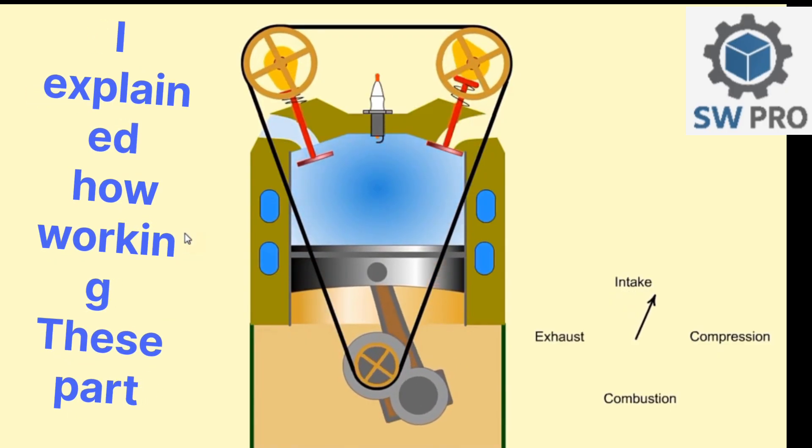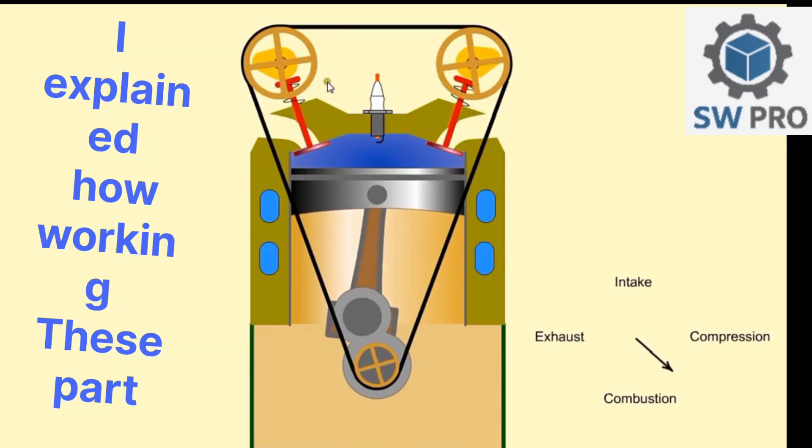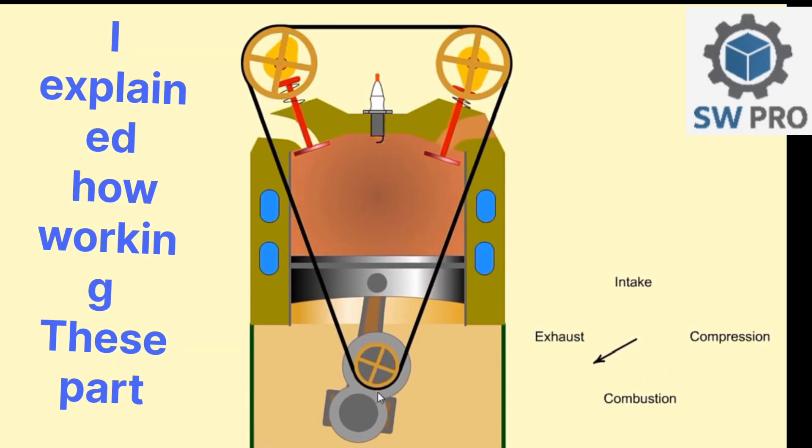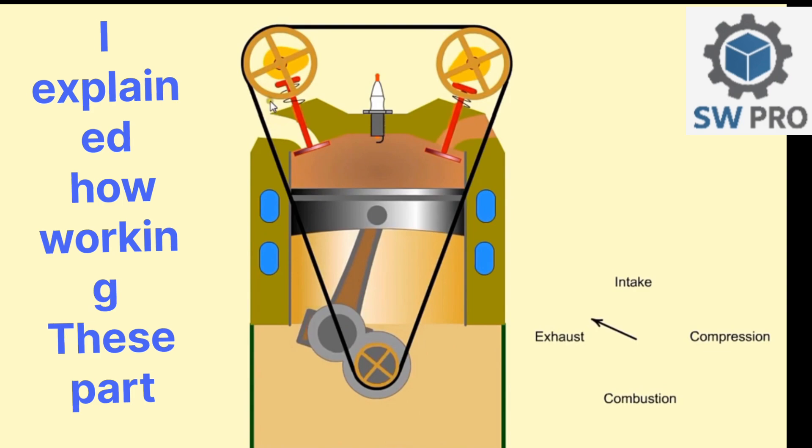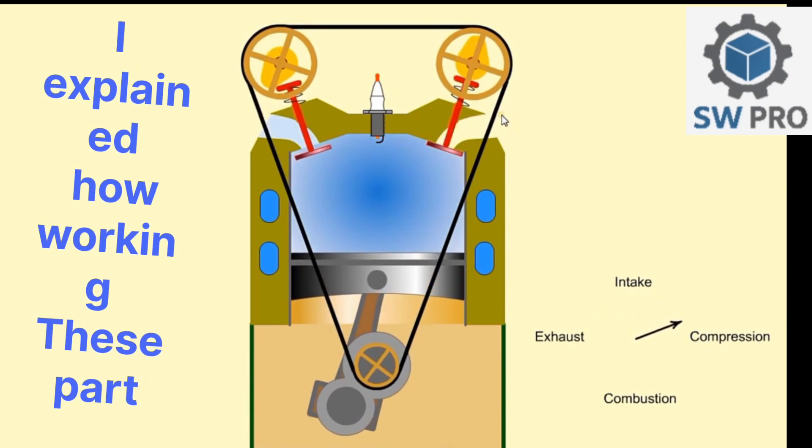Note the camshafts which operate the valves only rotate at half the speed of the crankshaft. This is achieved by using larger diameter pulleys on the camshafts. The timing belt ensures that the valves open and close at the correct time relative to the position of the piston.